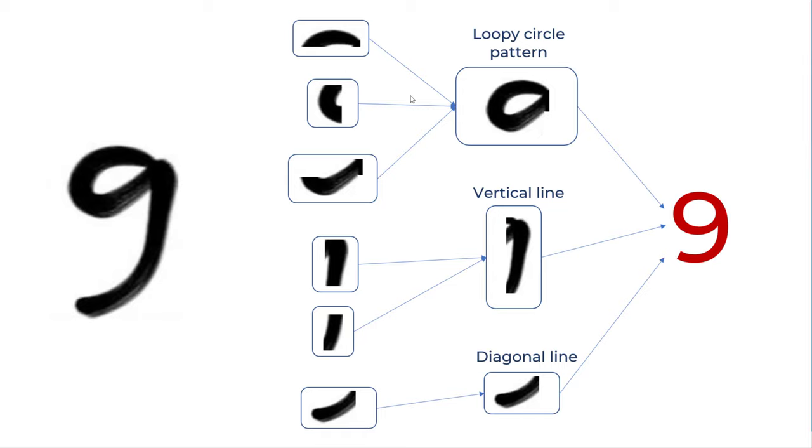Same thing with handwritten digit 9. There are these little edges which come together and form a loopy circle pattern which is kind of like a head of digit 9. In the middle, you have a vertical line. At the bottom, you have a diagonal line.